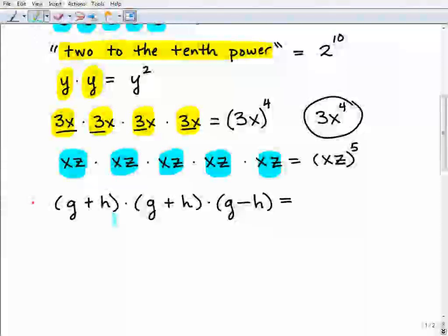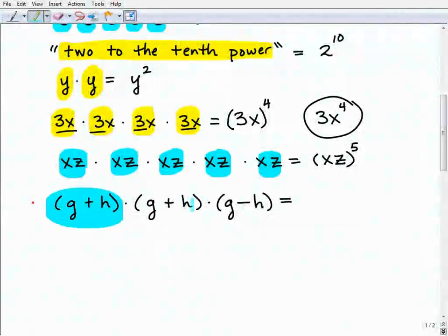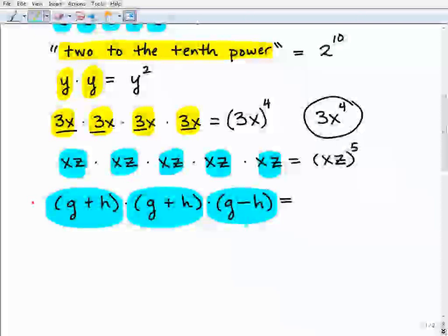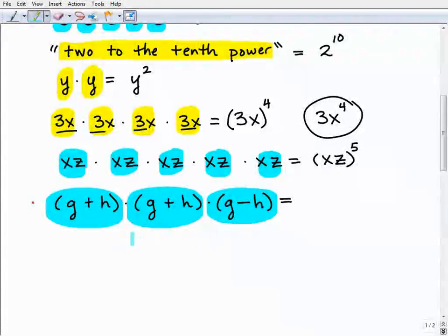And now here, our last problem, we already have parentheses. So we have X plus H times X plus H times X minus H. Now you might say, well, X minus H is different than the others. It's kind of like that, I believe it was Sesame Street. Something doesn't look like the one thing, and you have to look and say, well, what doesn't fit in here? Well, something doesn't fit in.